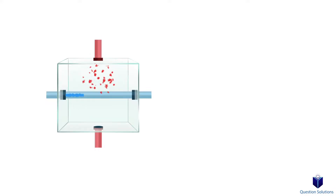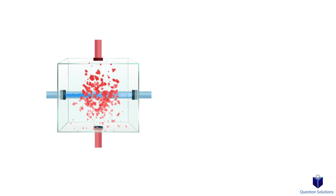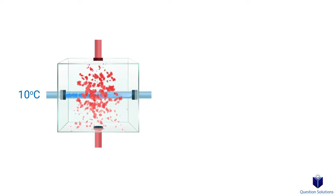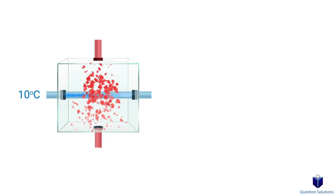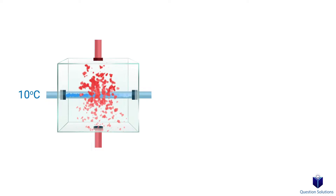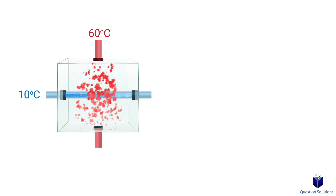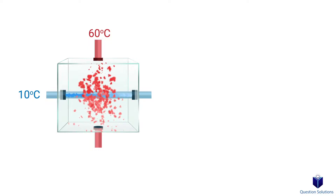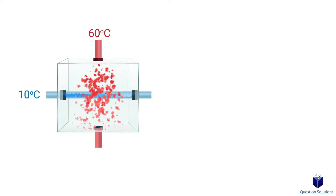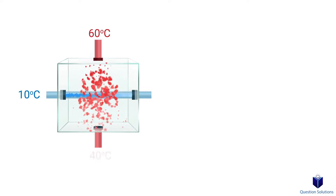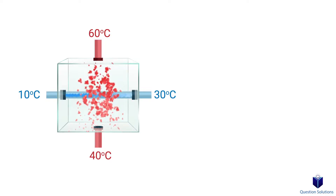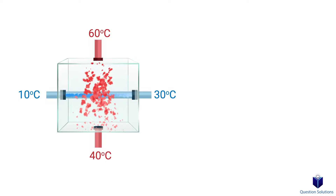A simple system would look like this. Some fluid is flowing through the blue pipe, initially at a temperature of 10 degrees Celsius. The red pipe brings in another fluid into the heat exchanger — this fluid is hot, at 60 degrees Celsius. As this fluid travels through the exchanger, the fluid in the blue pipe absorbs this heat. The fluid in the red pipe decreases in temperature while the fluid in the blue pipe increases in temperature. This is the basics of a heat exchanger.